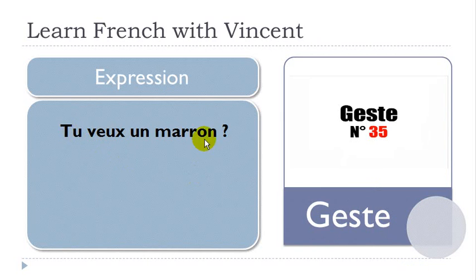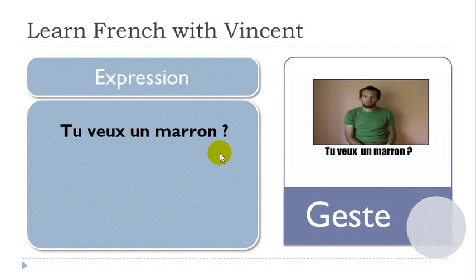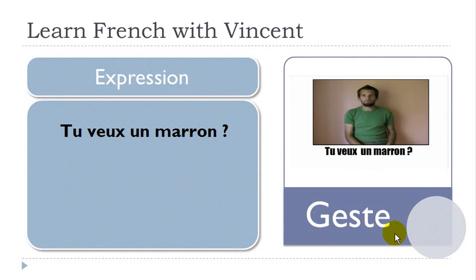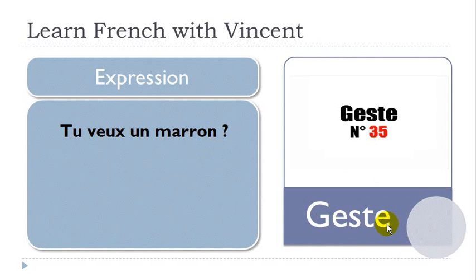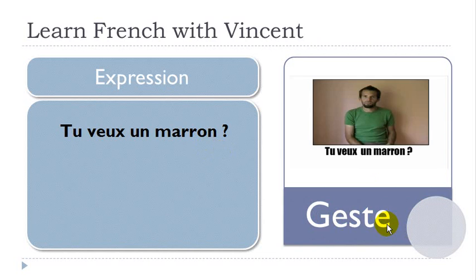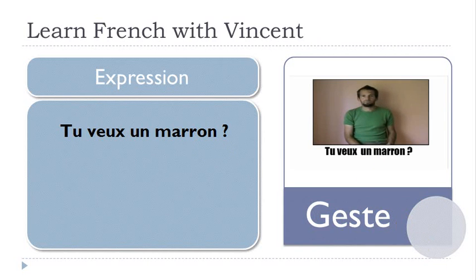Next: 'Tu veux un marron?' If you want to threaten someone and tell them that you could hit them, that's the gesture. It's a threat — 'Tu veux un marron?' meaning 'you want me to hit you?'